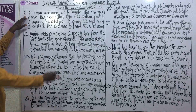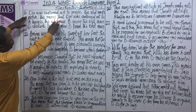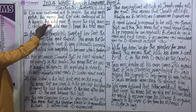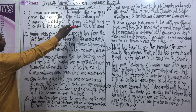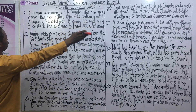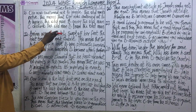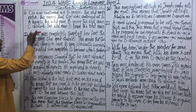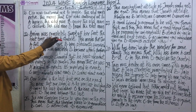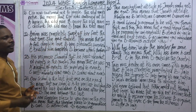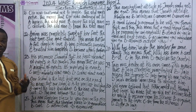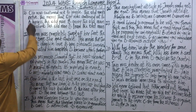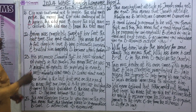Question 21: Ojo was cautioned not to juggle the old man's nerve. This means that Ojo was cautioned not to: A) harass the old man, B) annoy the old man, C) disturb the old man, D) tease the old man. The correct answer is option A — harass the old man.